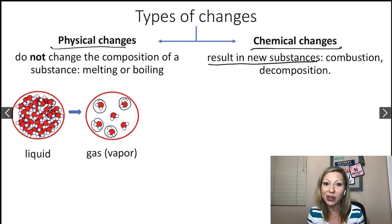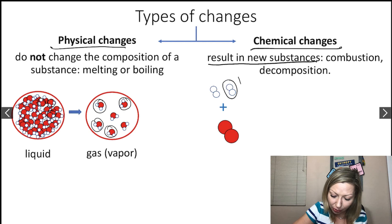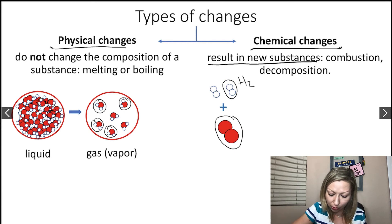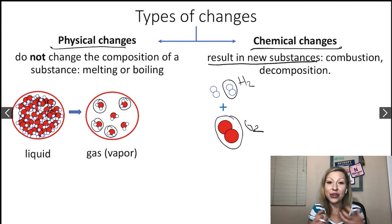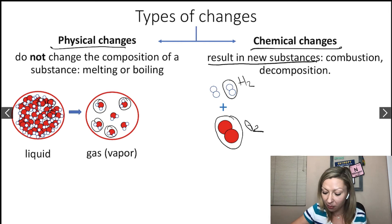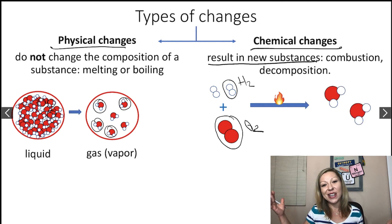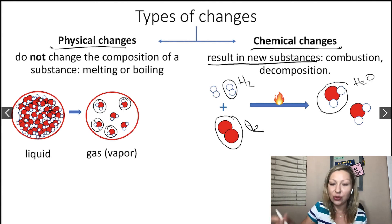How about chemical changes? Let's take hydrogen molecules H2 and O2. What happens when they react in a combustion reaction? We are expecting to get a new substance, because this is a chemical change. Indeed, as a result of the combustion reaction, you get water molecules — from H2 plus O2, you get H2O.